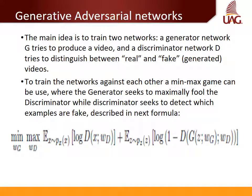The main idea of generative adversarial networks is to train two networks: a generator network G, which tries to produce a video, and a discriminator network D, which tries to distinguish between real videos and fake generated videos. These networks are trained against each other in a min-max game, where the generator seeks to maximally fool the discriminator, while simultaneously the discriminator seeks to detect which examples are fake, as the formula describes.